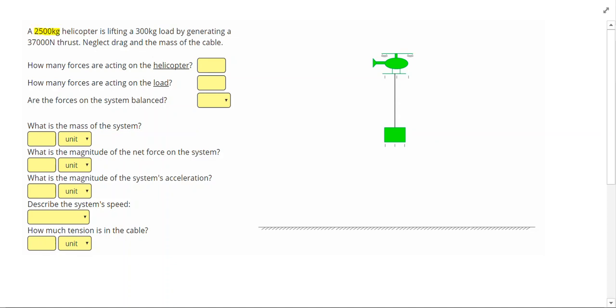A 2,500 kg helicopter is lifting a 300 kg load by generating a 37,000 N thrust. Neglect drag and the mass of the cable. Let's go ahead and start by drawing our forces acting on each object.